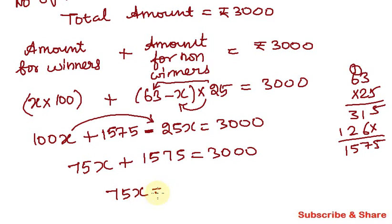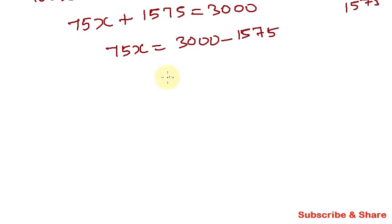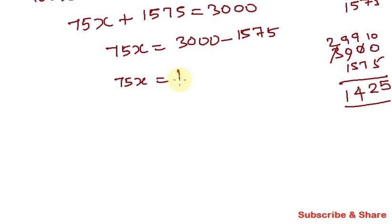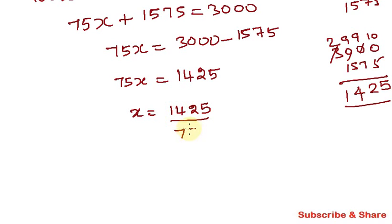So 75x equals 3000 minus 1575. So 75x equals 1425. Therefore x equals 1425 divided by 75.